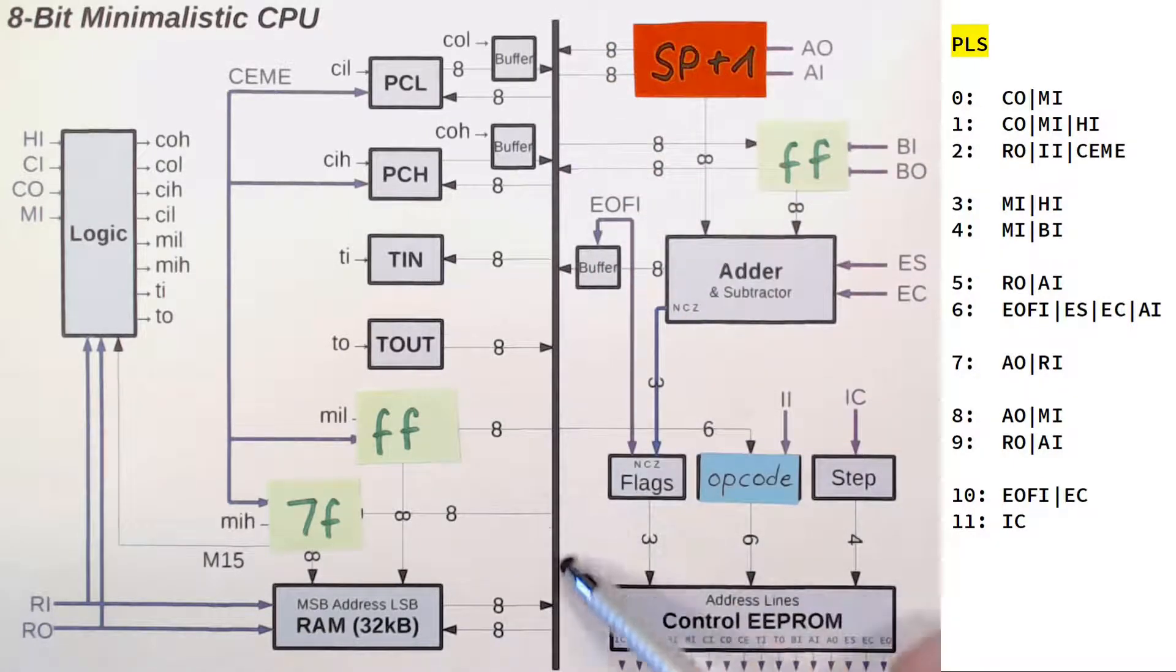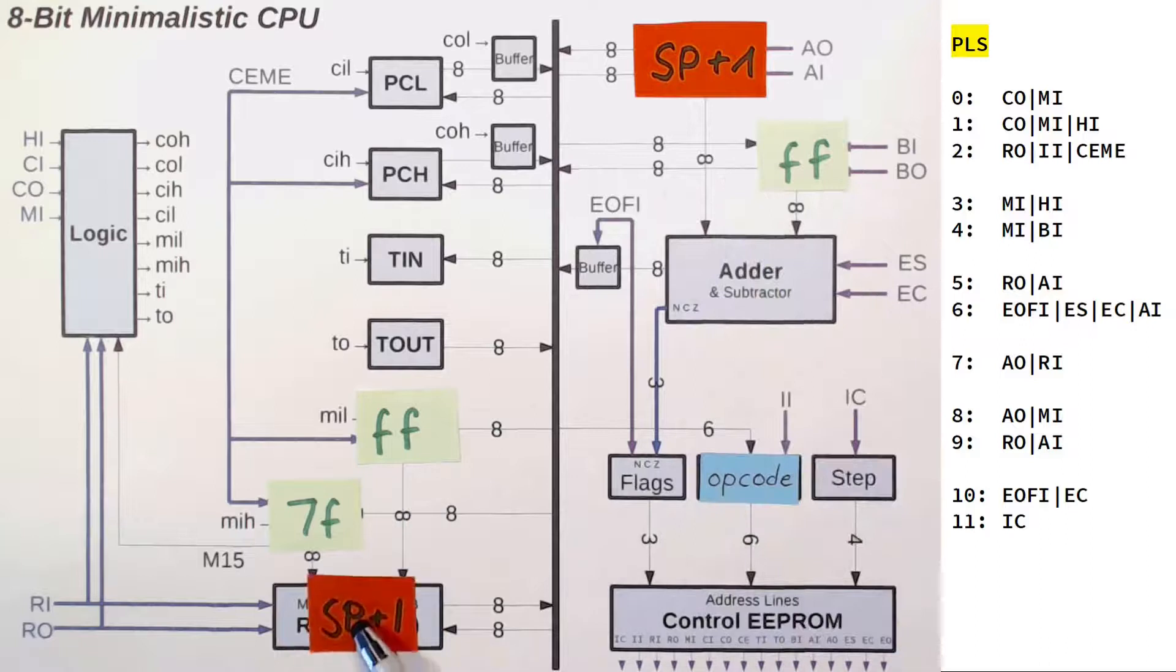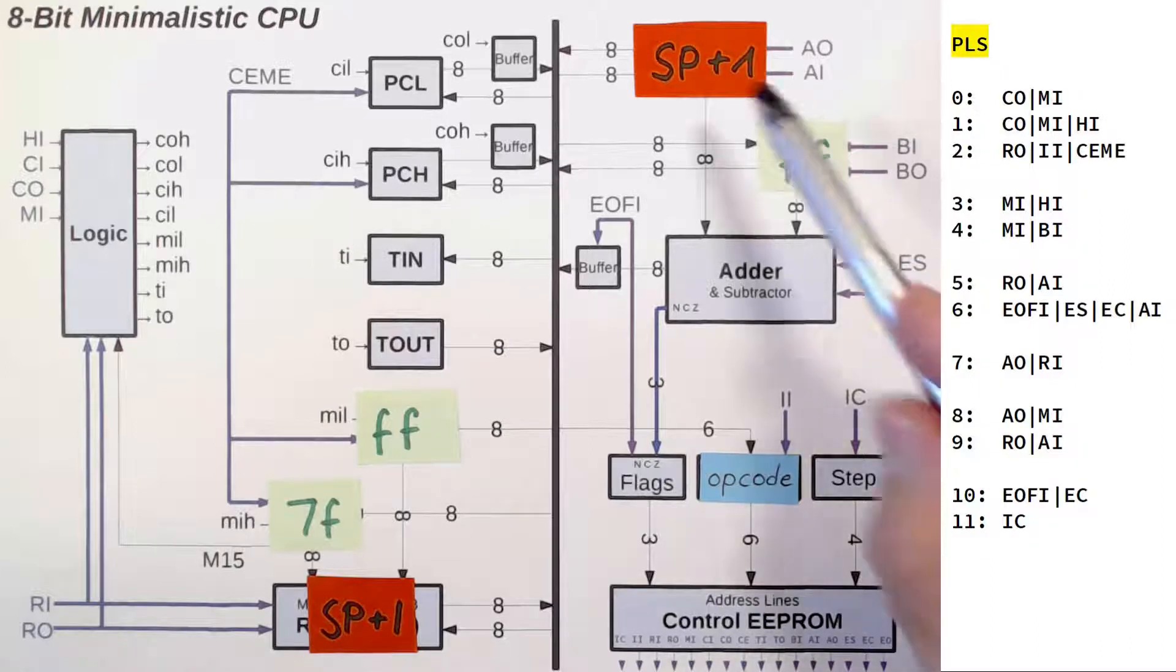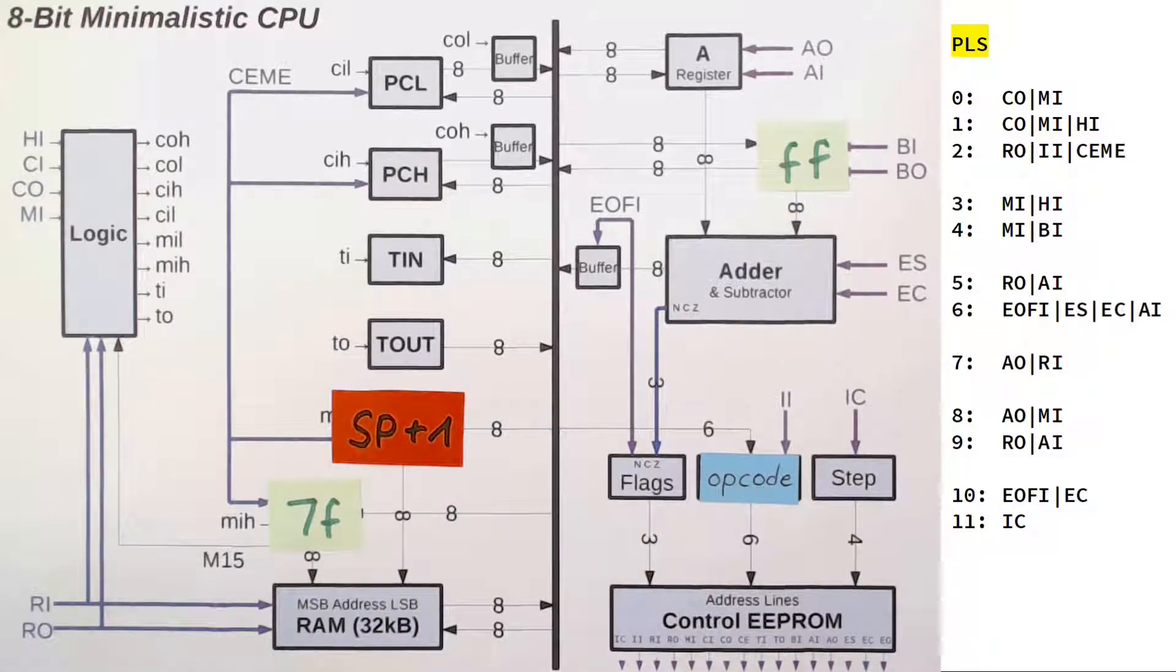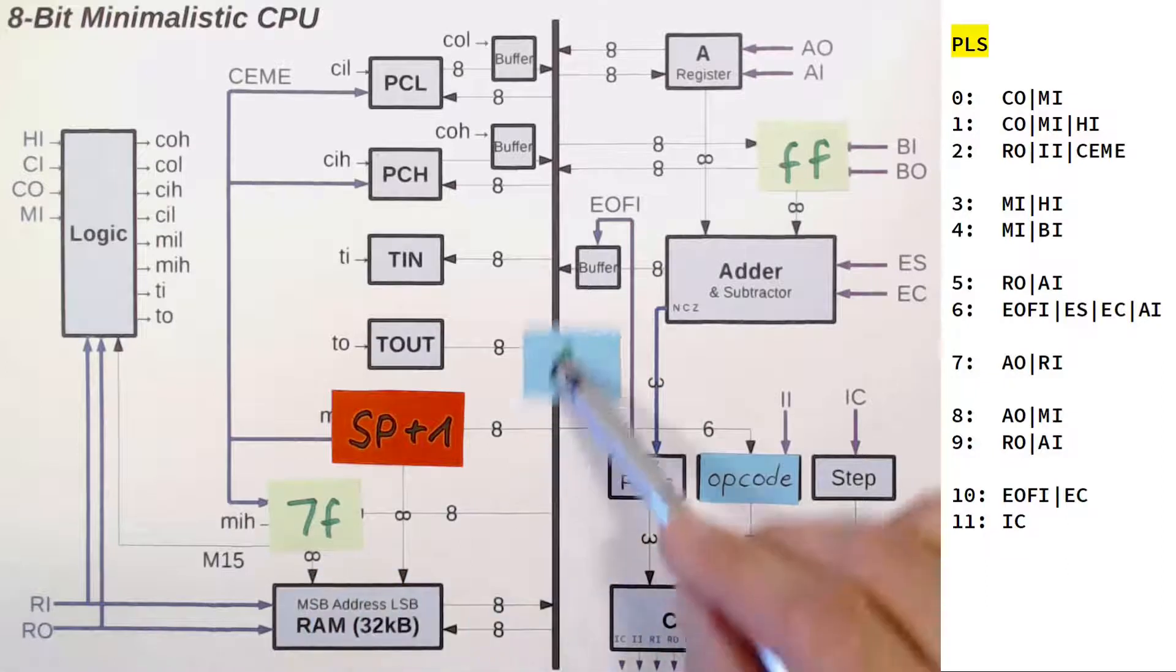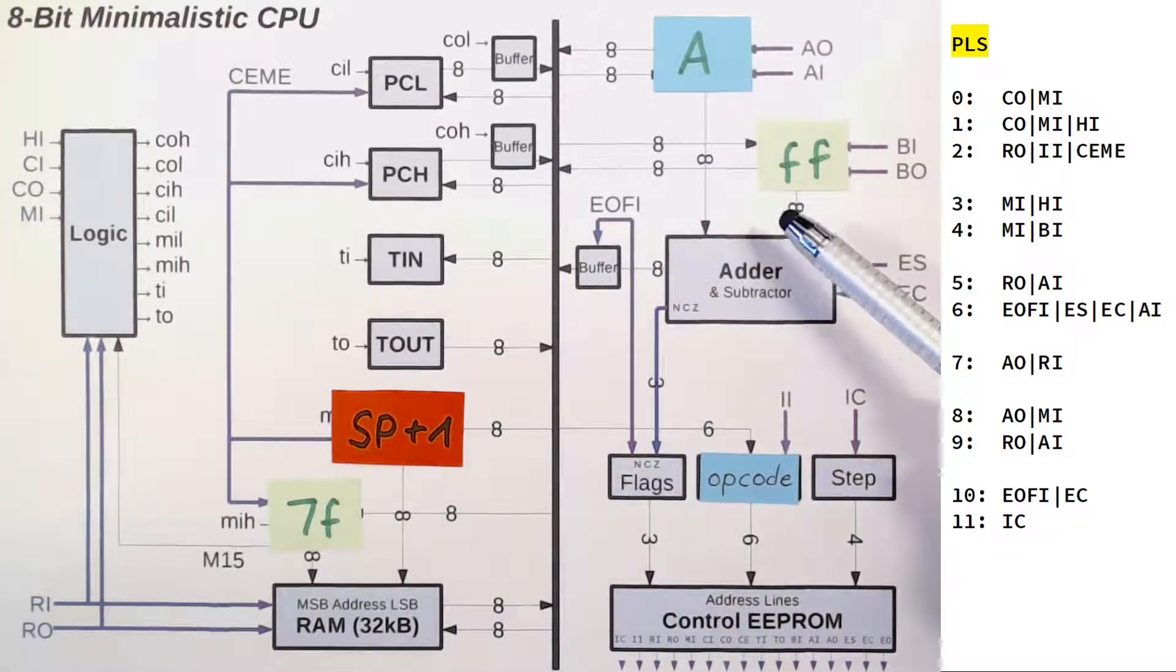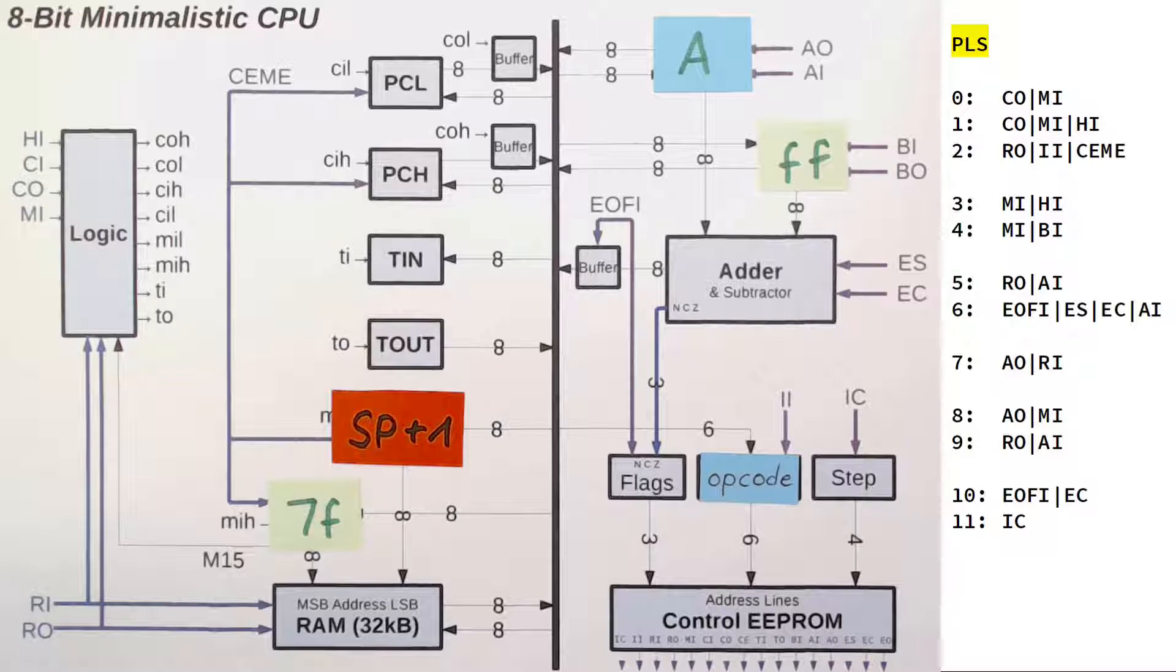Next, A out RAM in stores our incremented stack pointer at the RAM address 7FFF. And A out memory in copies that same incremented stack pointer to our MAR. So we have our initial value A exposed again. In step number 9 RAM out A in transfers it back into the A register. Step number 10 effectively does nothing since it first subtracts 1 and then adds 1 to A, but it updates the flags to a meaningful value. Finally, step number 11 clears our step counter and we are done again.